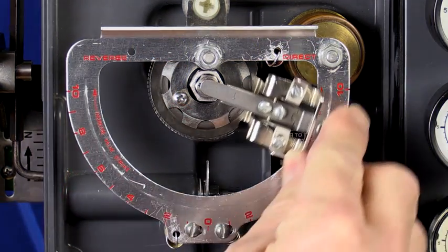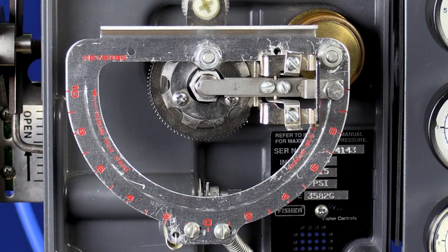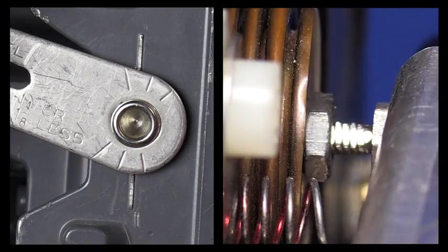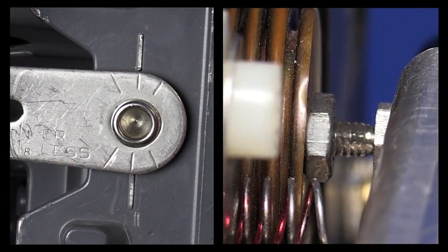Now, in step four, we move the flapper assembly to the number 10 on the direct side of the beam. Check the feedback arms. If they are not parallel, adjust the bellows pin using an eighth inch wrench until they are.